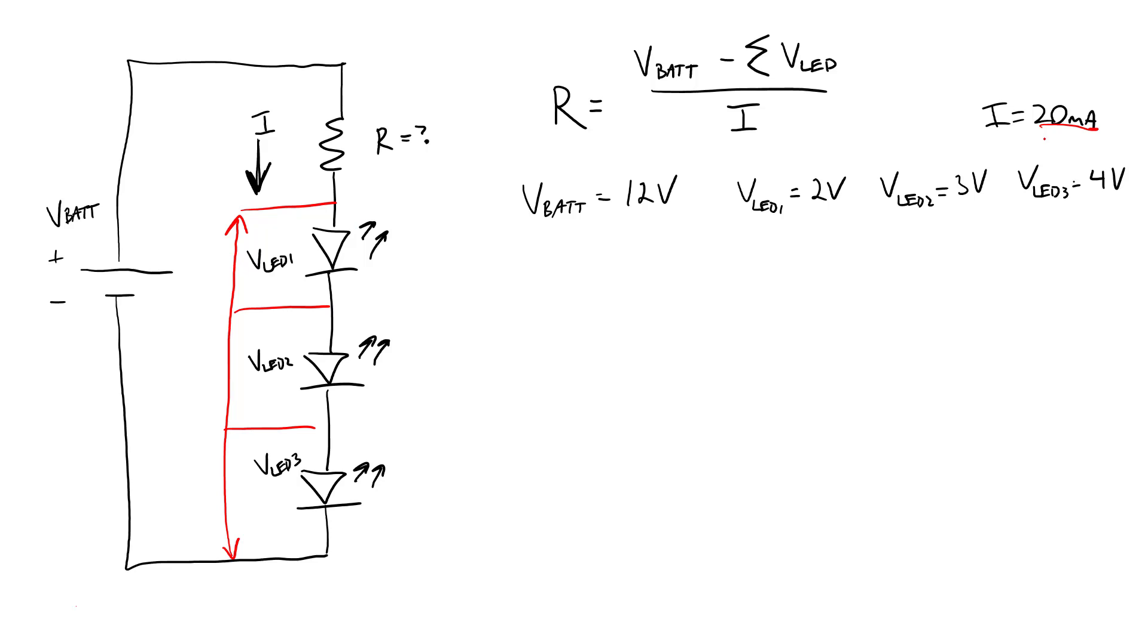So if you do need different currents through your LEDs, then you might actually be better off with the parallel circuit configuration, which we cover in the video before this one in the playlist. Again, link down there in the description.